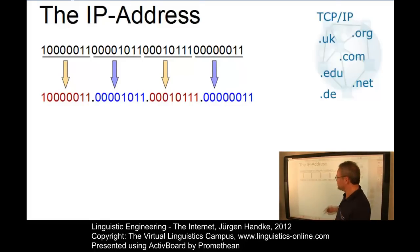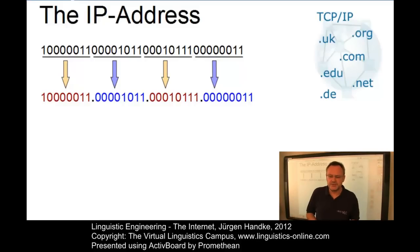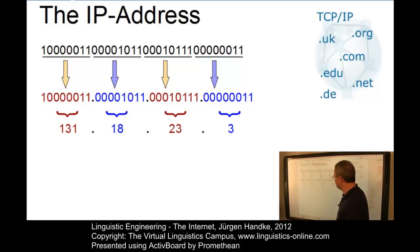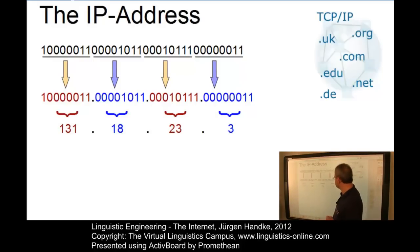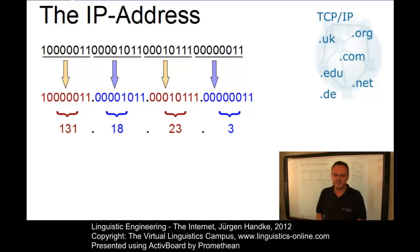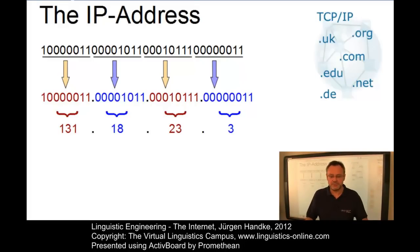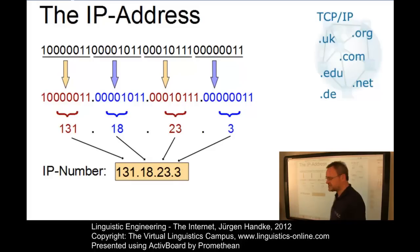These octets or bytes can be translated into decimal code. In our case, the decimal code would be 131 for the first octet, 18 for the second octet, 23 for the third, and 3 for the fourth. This decimal representation is normally represented in a dotted format, and so there is eventually the IP number.